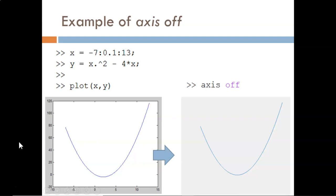Here is an example of using axis off. As you can see, the data, or the blue line, is still shown, but the axis numbers and the white box are gone.